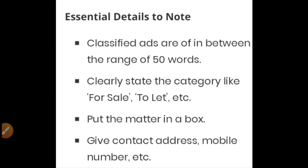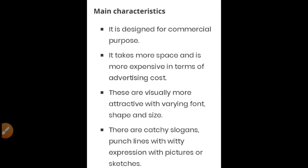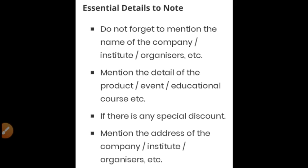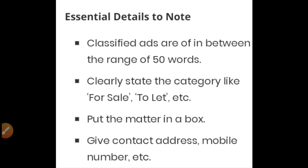For comparison, here are the essential details of a classified ad: it is within 50 words, you clearly state the category like 'for sale' or 'to let,' put the matter in a box, and give contact address and mobile number. Compare these with the characteristics of a commercial ad to see the difference. That is all for today; the rest will continue in the next video. Thank you.